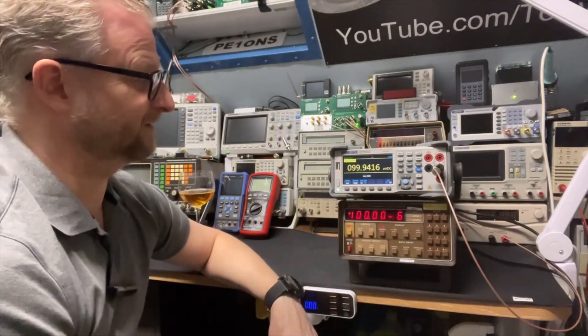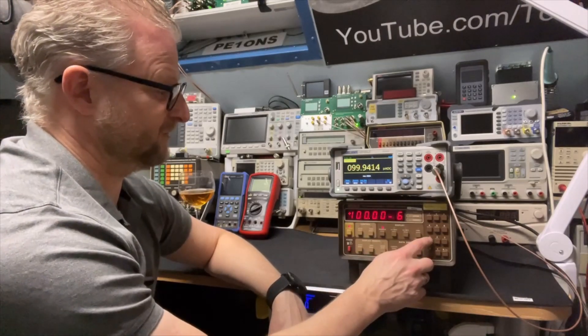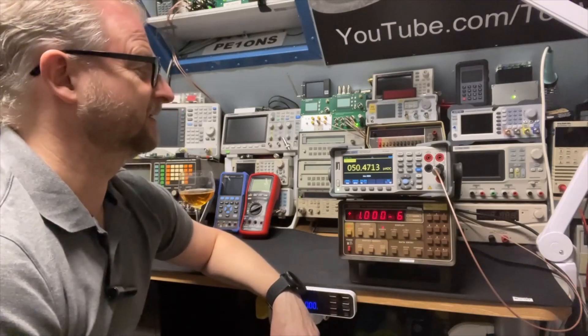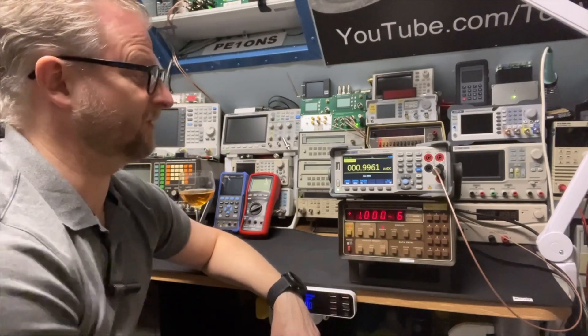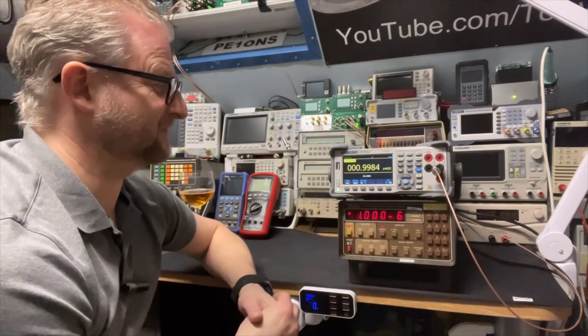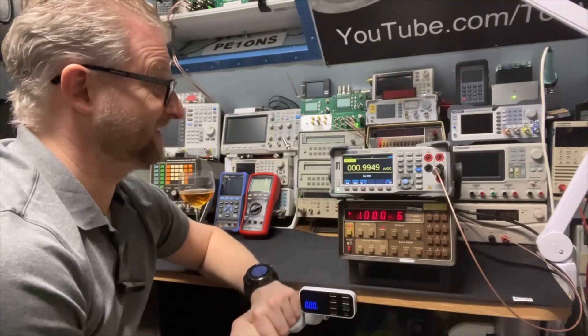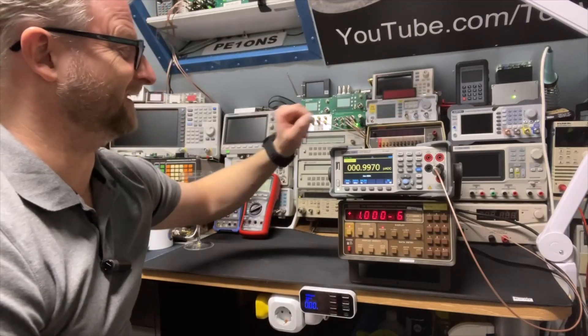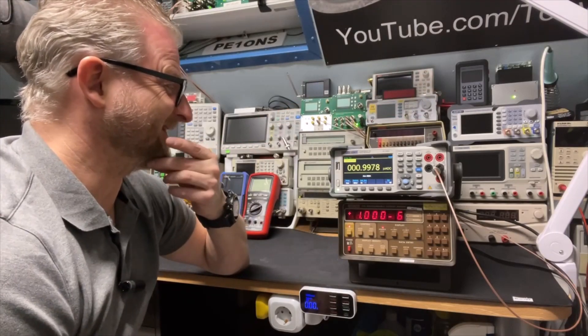We can also do minus six exponent, so we're in the microamps. If I switch it over now it will go to 100 microamps. Here it is, 100 microamps. Cool. We can even do one microamp. Yeah, look at that - one microamp.